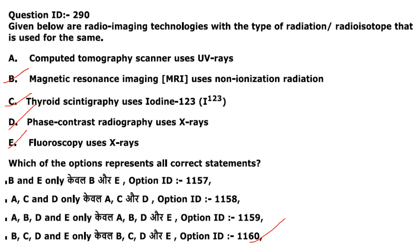Next: radio imaging technologies and their radiation types. Computed tomography uses X-rays (not UV rays) — statement A is incorrect. MRI uses non-ionizing radiation — correct. Thyroid scintigraphy uses iodine-123 — correct. Phase contrast radiography uses X-rays — correct. Fluoroscopy uses X-rays — correct. The answer includes B, C, D, E — only A is not correct. That concludes the session. Please do like, share, and subscribe if you are new to my channel.